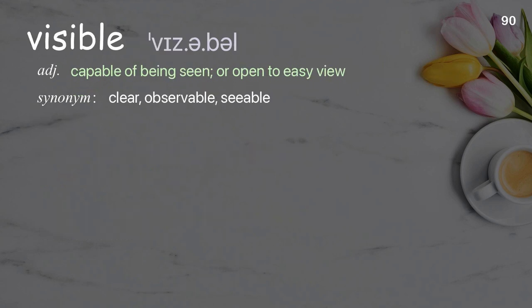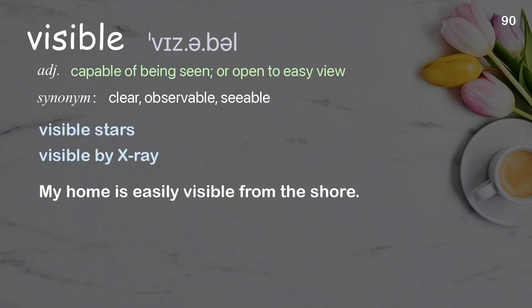Visible: capable of being seen or open to easy view. Examples: visible stars, visible by x-ray. My home is easily visible from the shore.